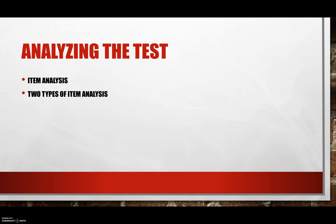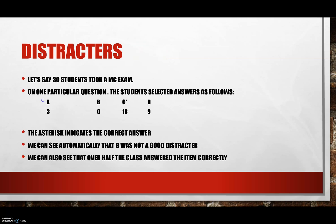Just as you expect to make scoring errors, you can expect to make errors in test construction—no test you make will be perfect. Item analysis is a way of identifying items that are deficient in some way, enabling you to construct a better test in the future. There are two types of item analysis: quantitative and qualitative. For example, if 30 students took a multiple choice exam, the asterisk indicates the correct answer—we can see that choice B was not a good distractor, and over half the class answered the item correctly.